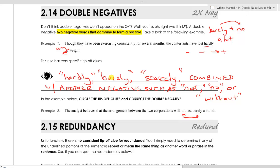We have a barely, and that's our tip-off clue, paired with a not, that's one of our other tip-off clues. So these are two negatives. We are combining two negatives in such a way that we're forming a positive. This sentence actually means, although the writer probably didn't intend this, that the analyst believes that the arrangement between the two corporations will last a while. So what we should do here is just get rid of one of these two negatives. We can just cross off the not or the barely. You will make the meaning slightly different depending upon which negative you get rid of, but it's not a big deal. You just need to get rid of one of them.